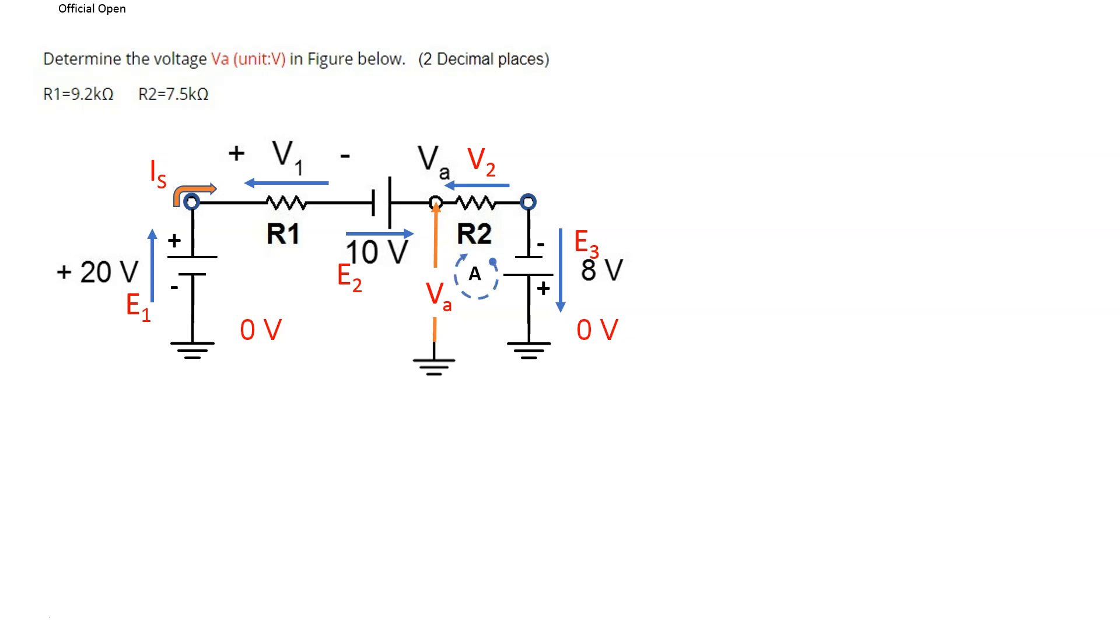We identify loop A. First, we calculate IS by using Ohm's law. IS is just the sum of all the battery sources or the voltage sources divided by the total resistance. So there are three voltages and two resistors. That gives us a current of 2.275 mA.